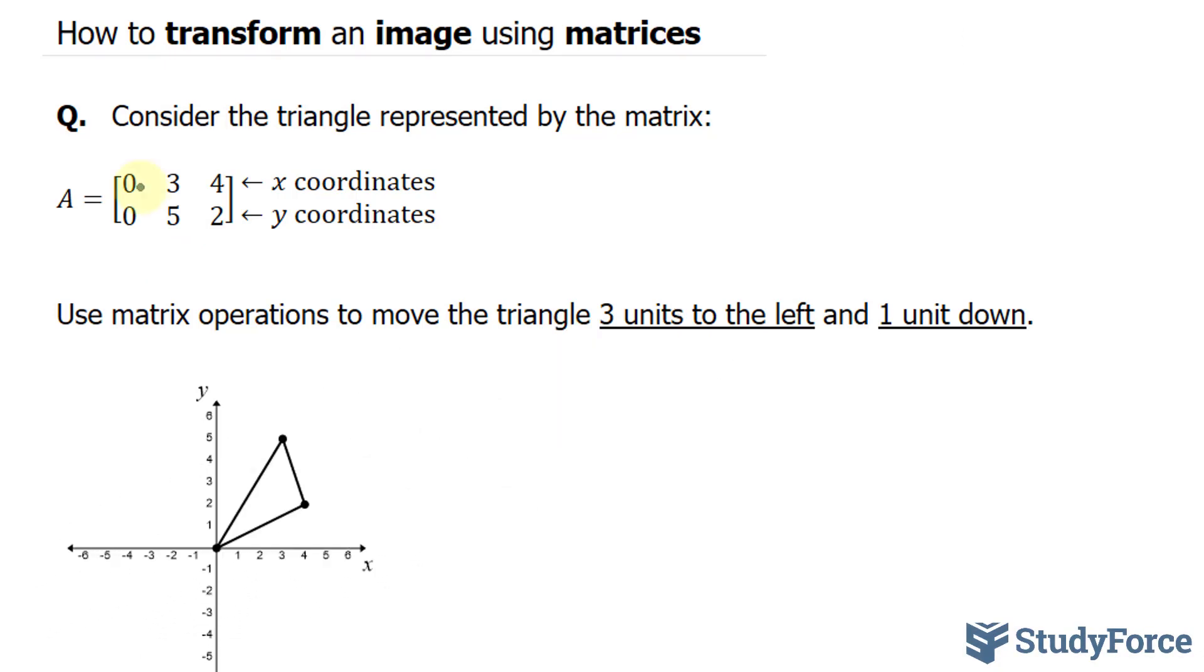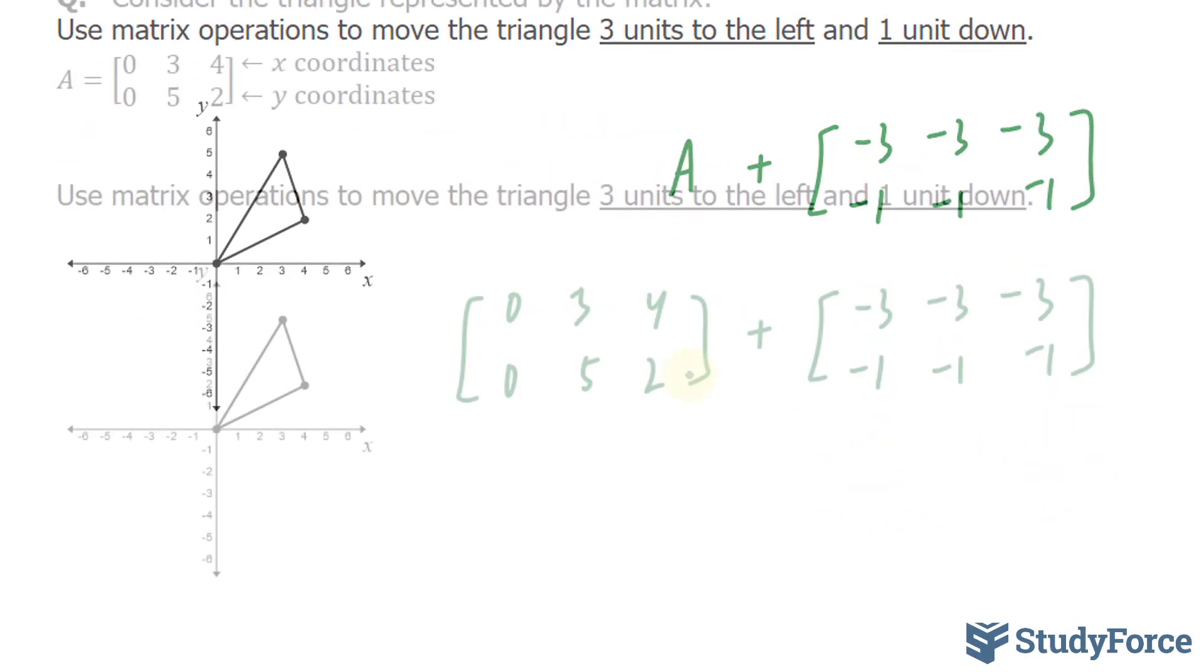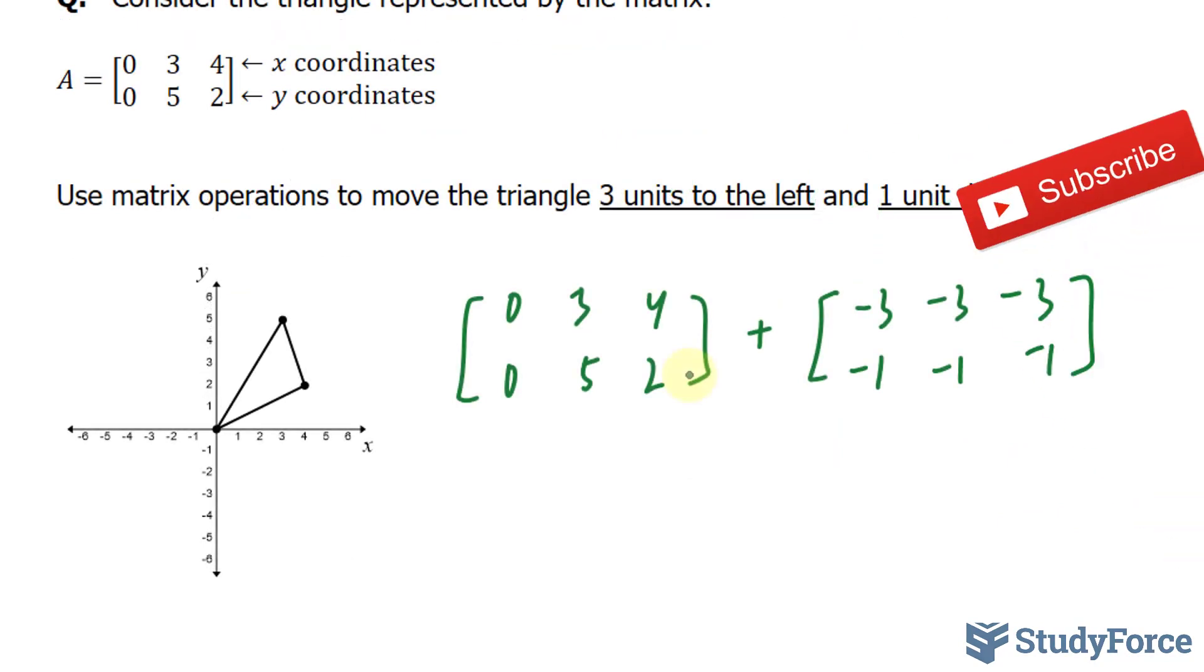So technically we'll have the matrix A plus the matrix negative 3, negative 3, negative 3, and negative 1, negative 1, and negative 1. So let's rewrite this. Now that we've set this up, we can go ahead and combine these two matrices.